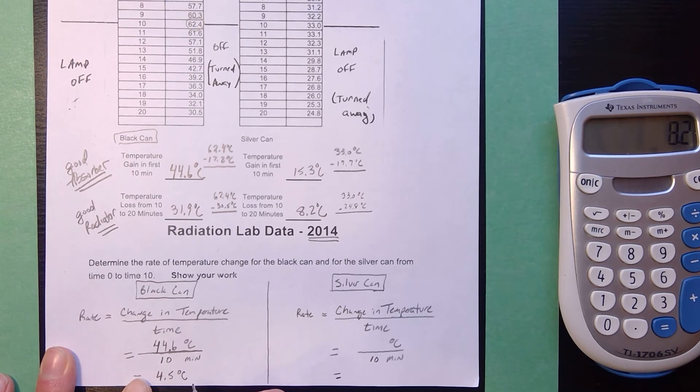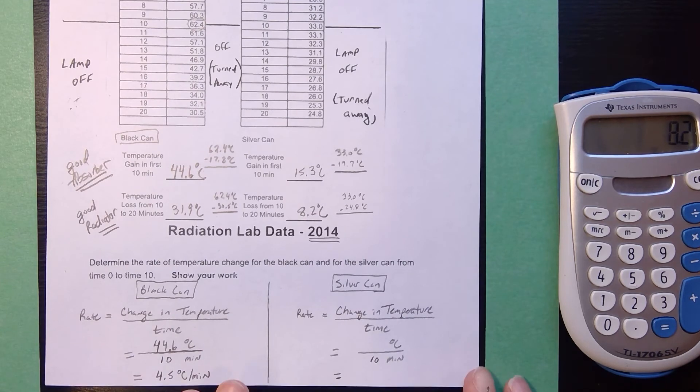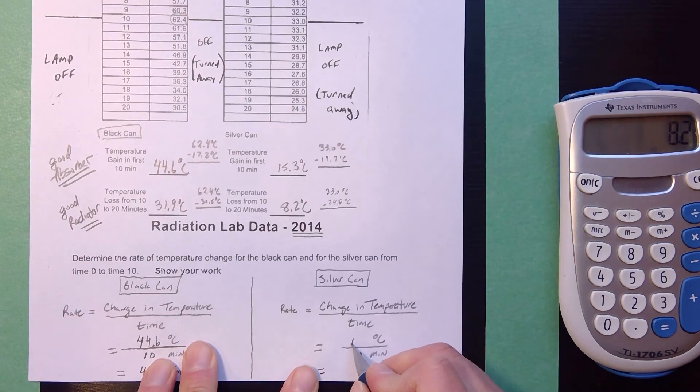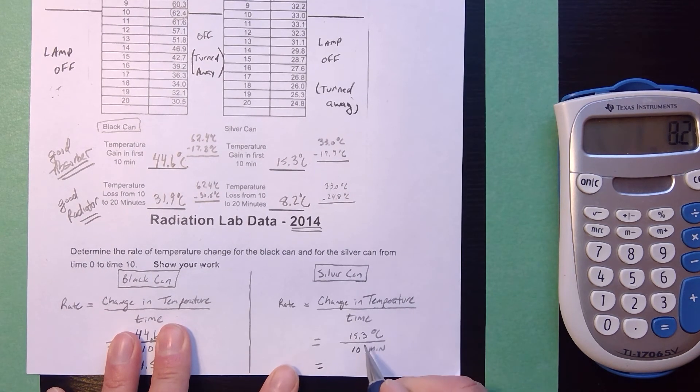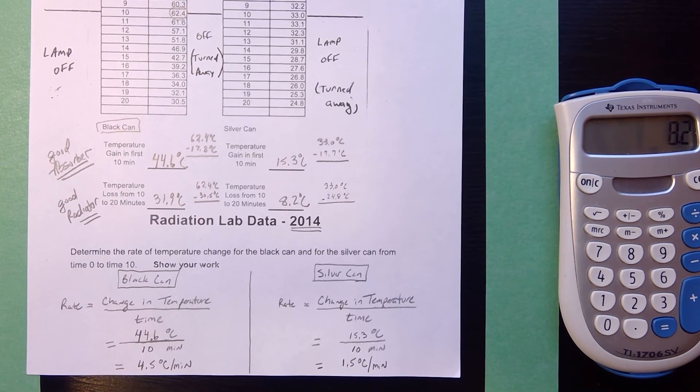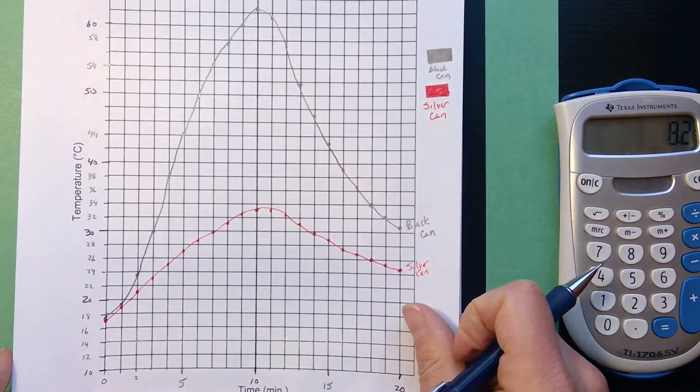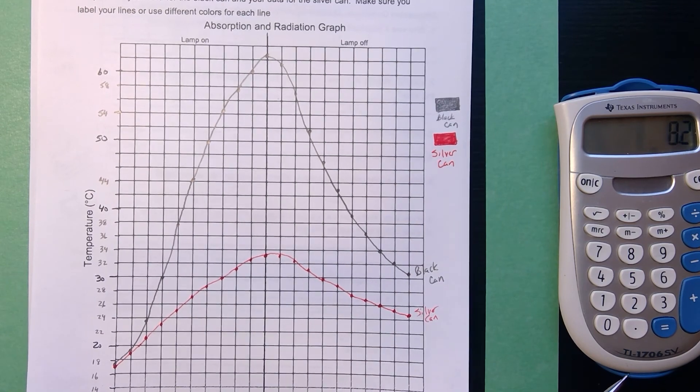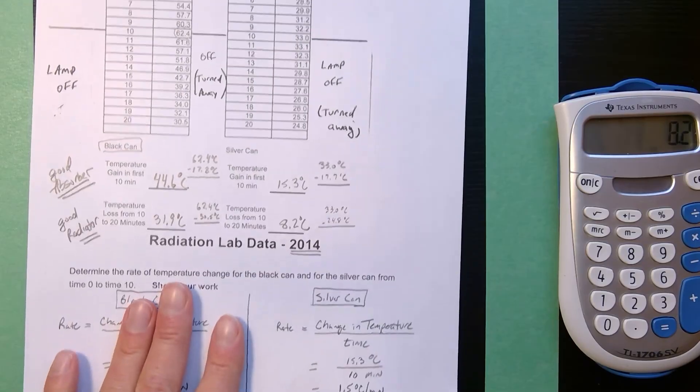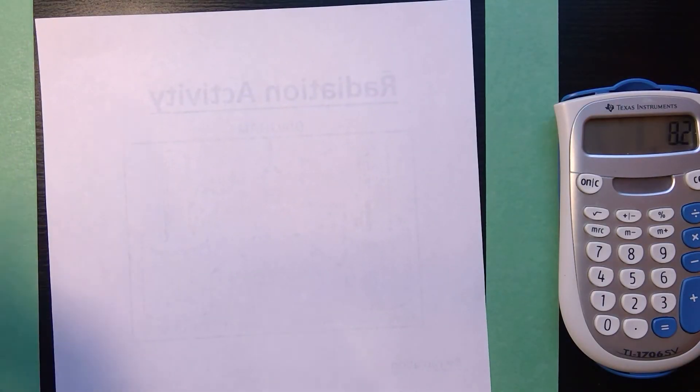Our silver can only went up by 15.3 degrees okay it gained 15.3 degrees in 10 minutes I divide by 10 so I shift the decimal this time the 3 does not round up so this would just be 1.5 degrees Celsius per minute. So you have your calculations your graph should look something like this make sure you label your scales and put appropriate titles and labels that's essentially what you need to do. Now I'm not going to go over every single question but there are a few questions from the discussions that were important.